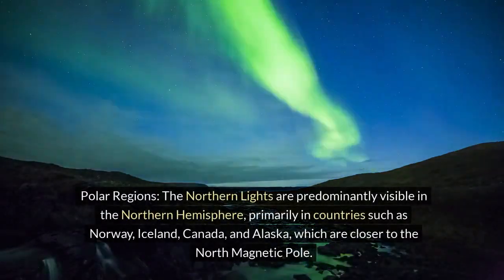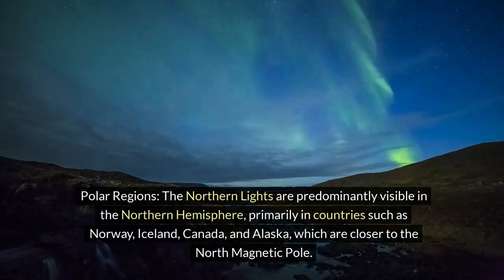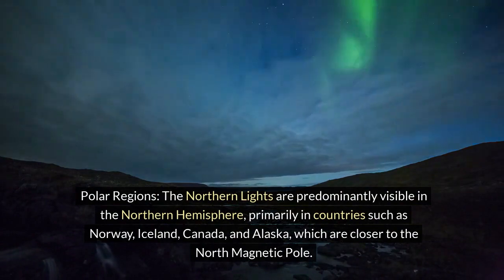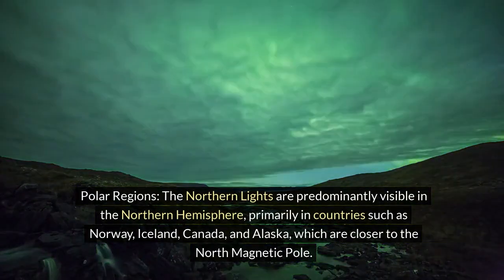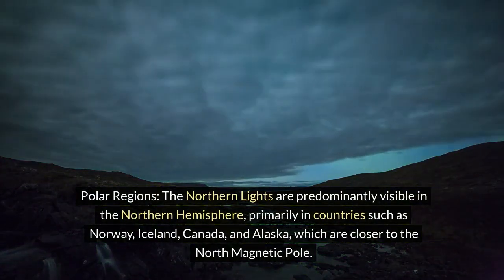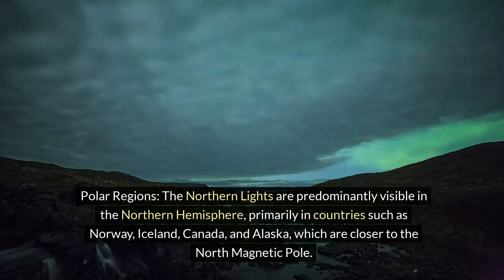Polar regions. The northern lights are predominantly visible in the northern hemisphere, primarily in countries such as Norway, Iceland, Canada, and Alaska, which are closer to the north magnetic pole.